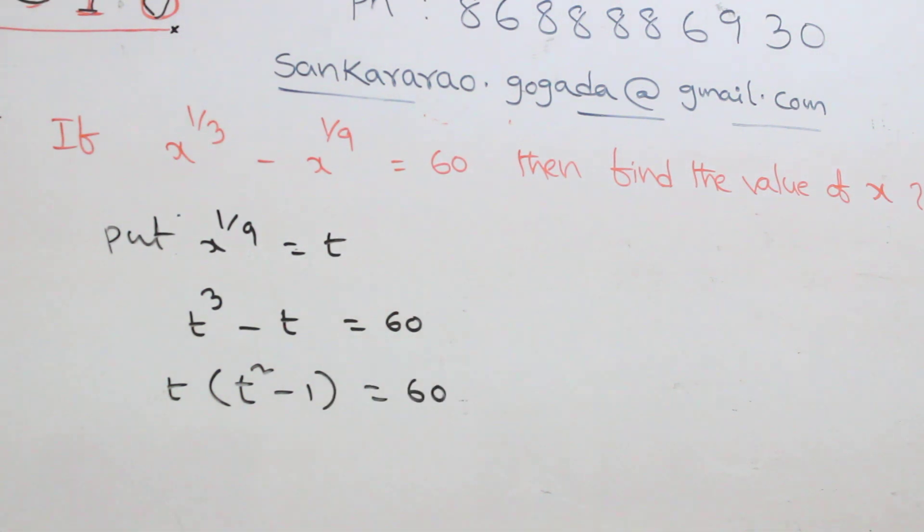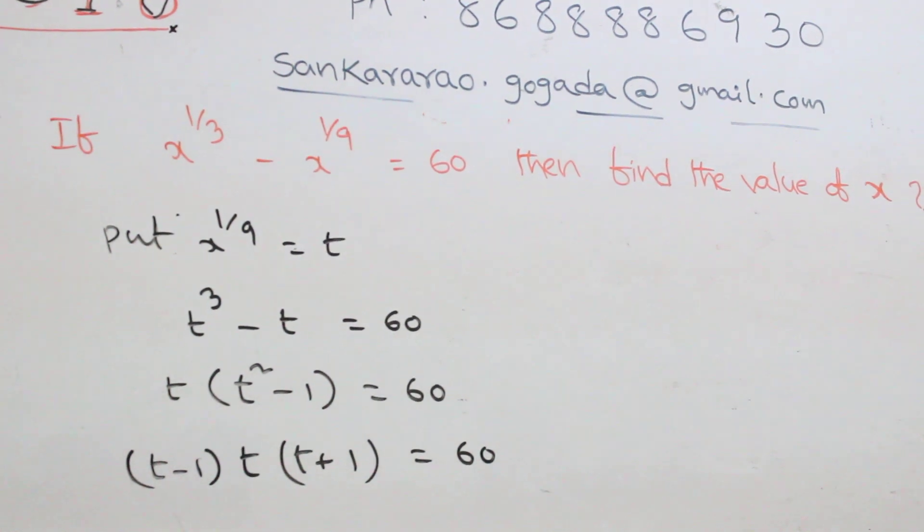In this one, a square minus b square is a minus b into a plus b. First you write t minus one. Next one you write t plus one. Next one, t is also there. That is equal to sixty. What are these numbers? T minus one, t, t plus one. This is the ascending at one of the other.